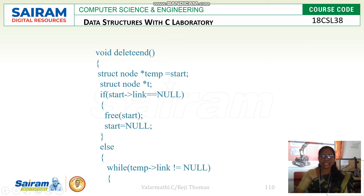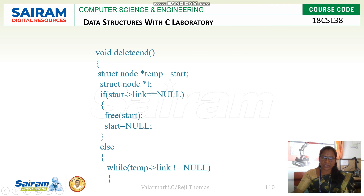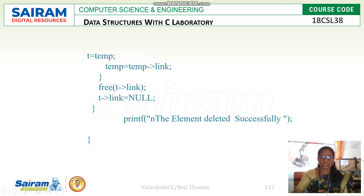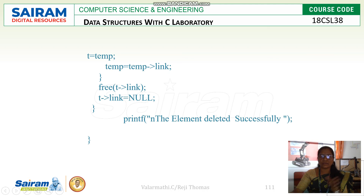Then delete at the end — similar to how we inserted a new node at the end. We traverse using: while temp->link is not equal to null, set T equal to temp and temp equal to temp->link, moving forward. Once it reaches null, we free that link and set T->link equal to null. This is what happens in deletion at the end.